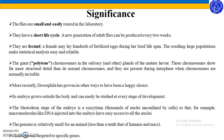More recently, Drosophila has proven to have been a happy choice in other ways. Its embryo grows outside the body and can easily be studied at every stage of development. The blastoderm stage of the embryo is a syncytium — thousands of nuclei confined by a single membrane — so macromolecules like DNA injected into the embryo have easy access to all the nuclei. The genome is relatively small for an animal, less than one-tenth that of humans and mice, and mutations can be targeted to specific genes.